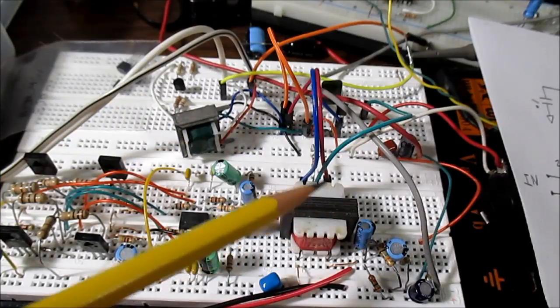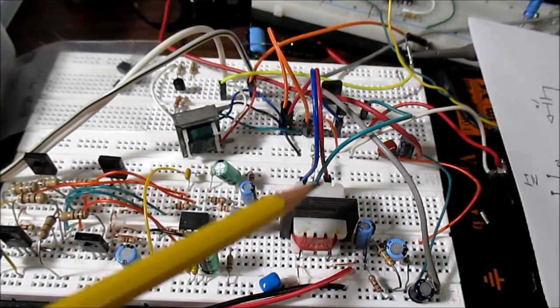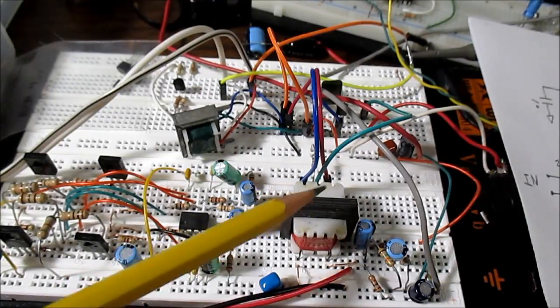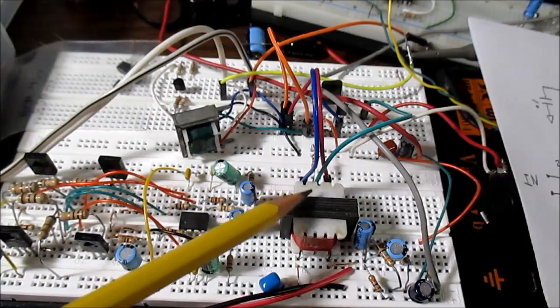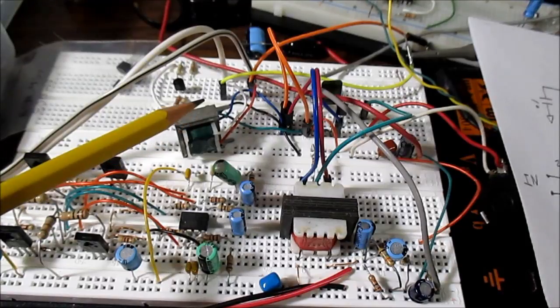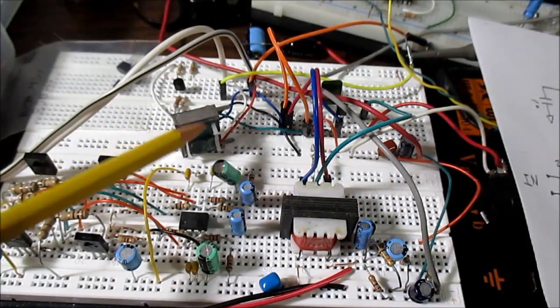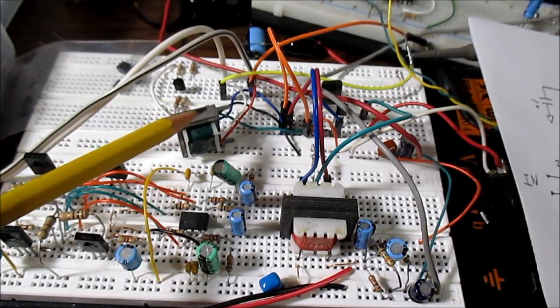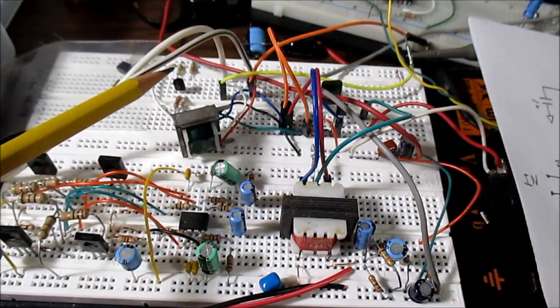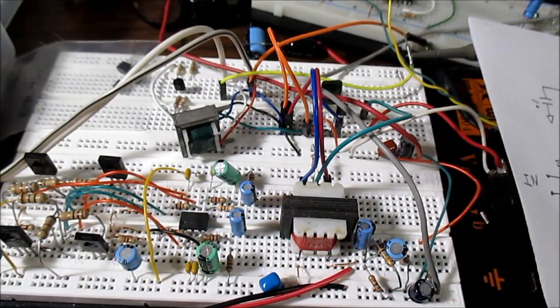One thing you might notice is this driver transformer is a lot bigger than the output transformer. And that's just because that's all I had available. So I just had to work with what I had. Normally this transformer would be the same size or smaller. They are not swappable. This one has different winding ratios. In fact, if you measure the output with a multimeter, the output DC resistance will be like 0.6 ohms or something like that. It will be very low, while the driver will have a lot higher values. Okay, I'm going to move on to the test.